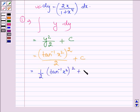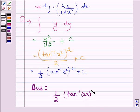This is further equal to half tan inverse x square whole square plus a constant. Thus on evaluating the given integral, we get the answer as half into tan inverse x square whole square plus a constant.